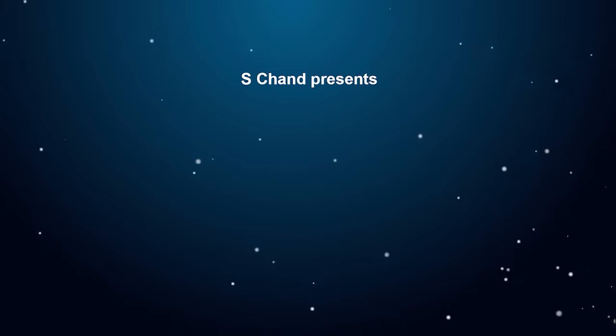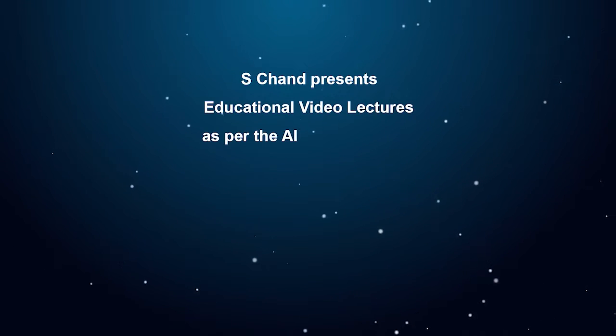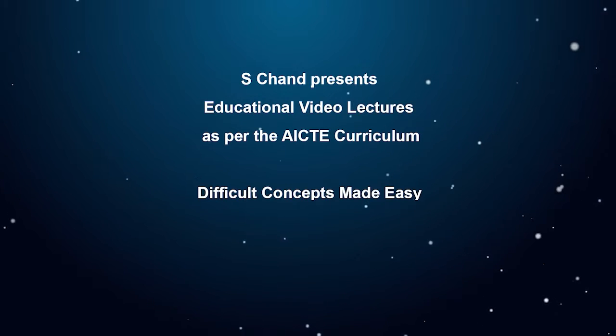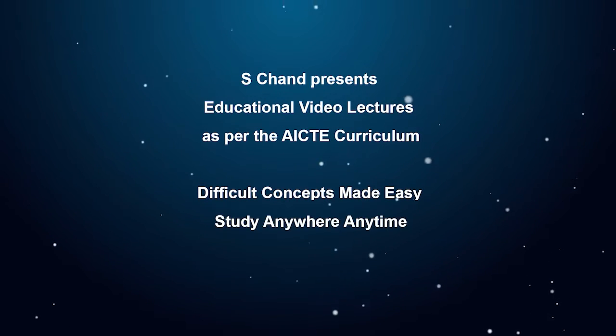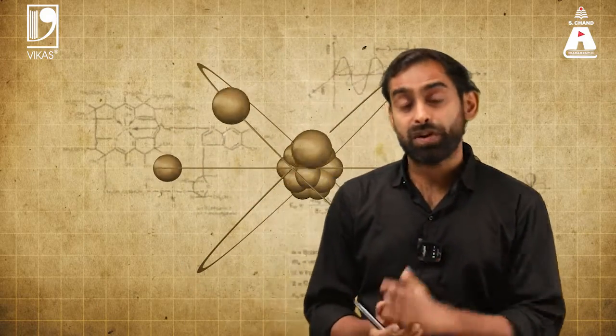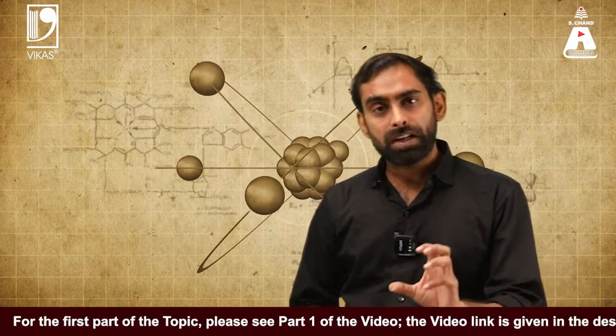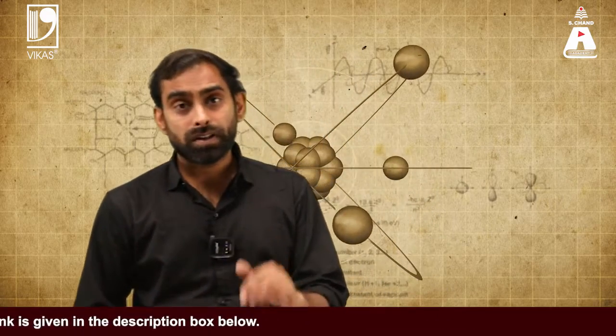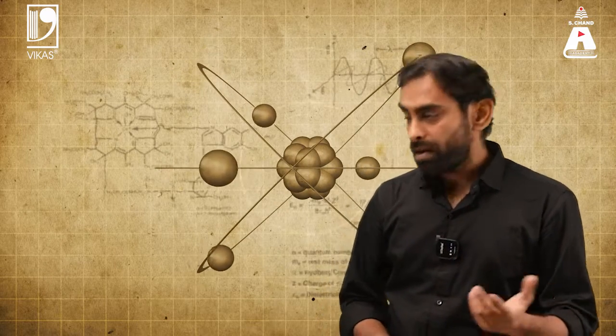Aschand presents educational video lectures as per the AICTE curriculum — difficult concepts made easy, study anywhere anytime. This is the second part of the molecular orbitals concept in engineering chemistry. In this part we will look closely into how molecular orbitals are formed, what the Schrödinger wave function for a molecular orbital is, and what different kinds of interactions or waveforms can occur when molecules are formed.